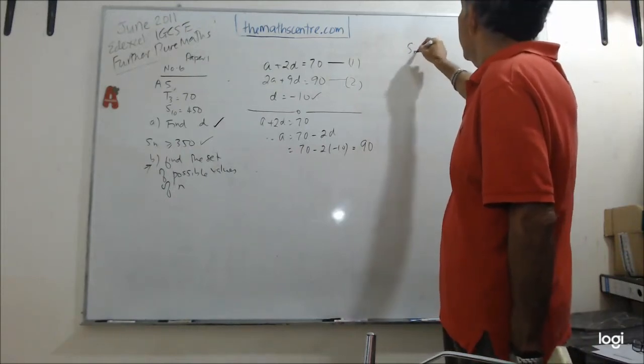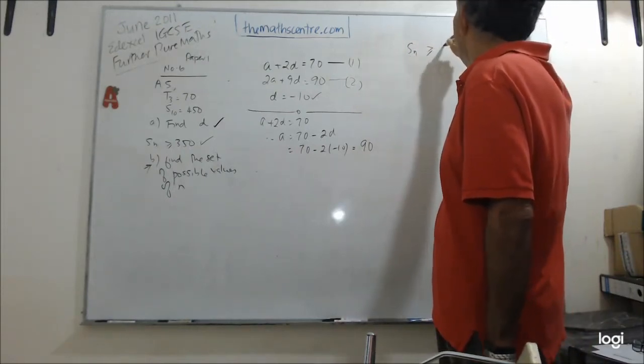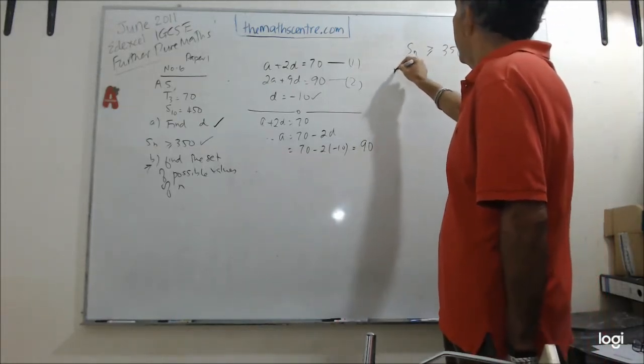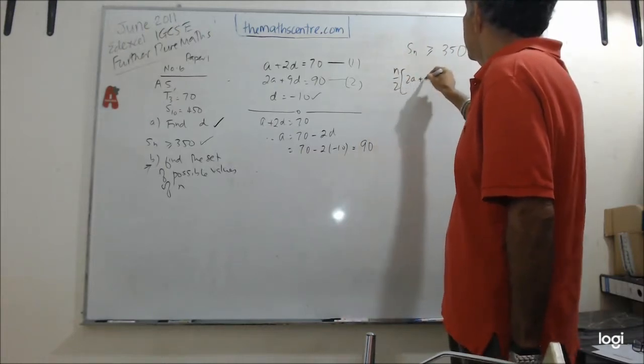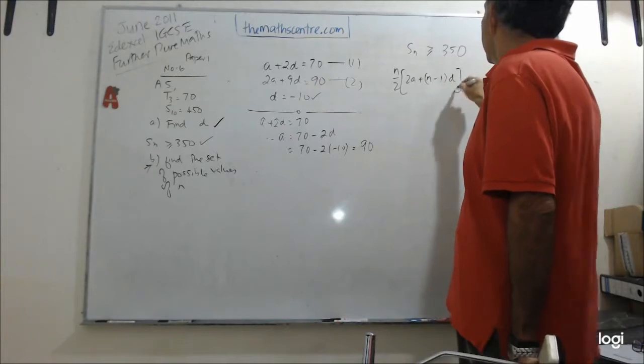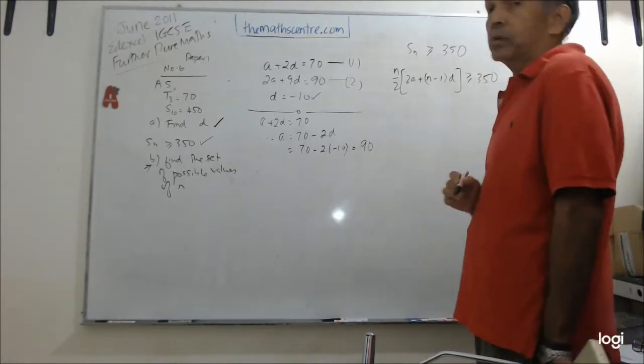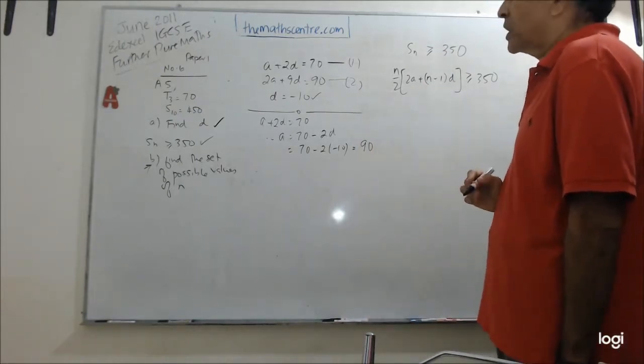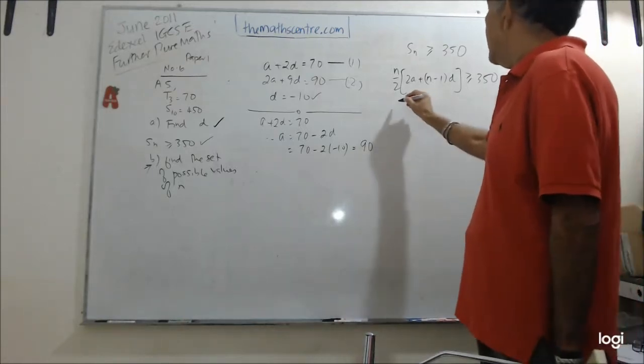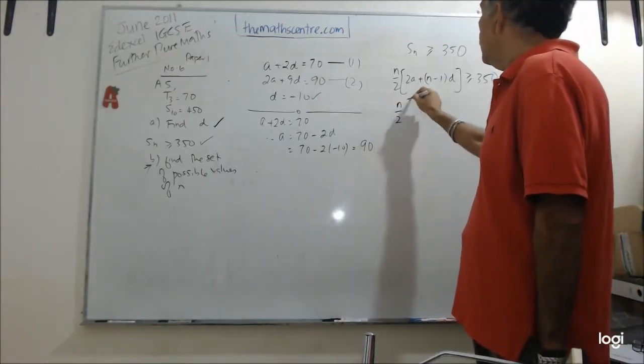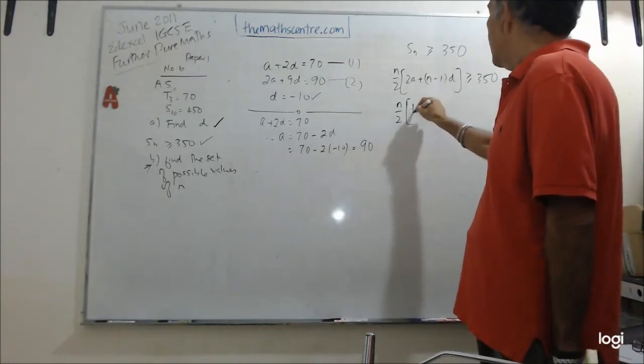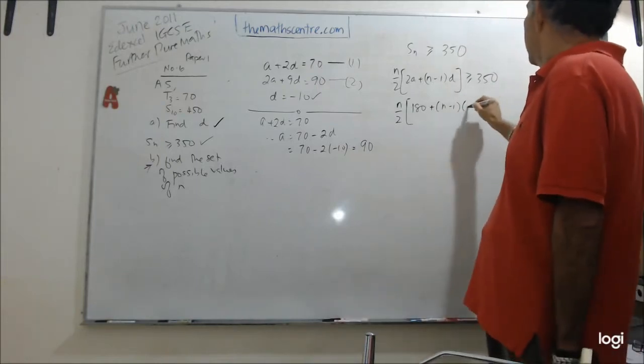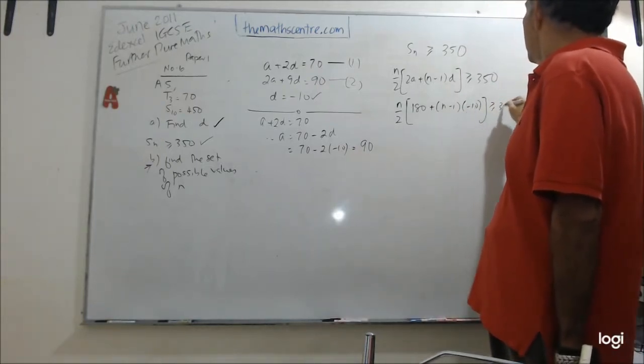So they gave me SN is bigger than or equals to 350. So what's SN? N over 2, 2A plus N minus 1D is bigger than or equals to 350. Do it slowly, this is an inequality. N over 2, 2A plus N minus 1D is bigger than or equals to 350. So let's leave this N over 2. What is 2A? 2 times 90 is 180 plus N minus 1. What is D? Negative 10. Bigger than or equals to 350.